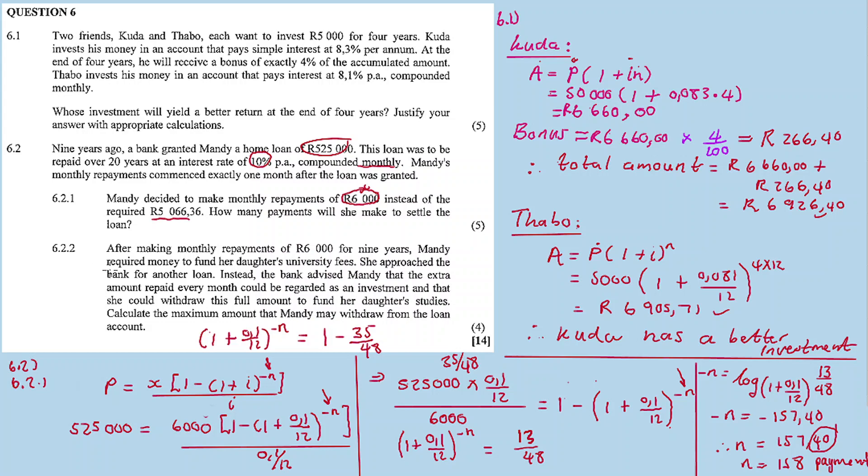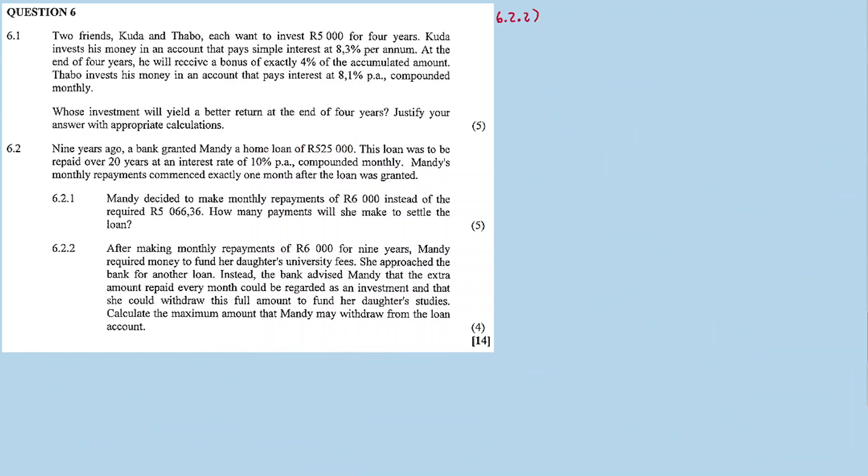6.2.2: After making monthly repayments of 6000 rand for nine years, Mandy required money to fund her daughter's university fees. She approached the bank for another loan. Instead, the bank advised Mandy that the extra amount repaid every month could be regarded as an investment and that she could withdraw this full amount to fund her daughter's studies. Calculate the maximum amount Mandy may withdraw from the loan account.